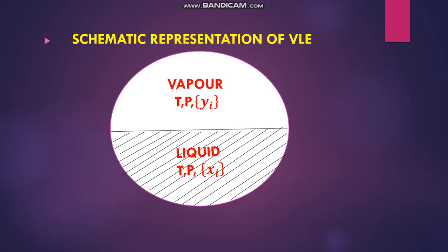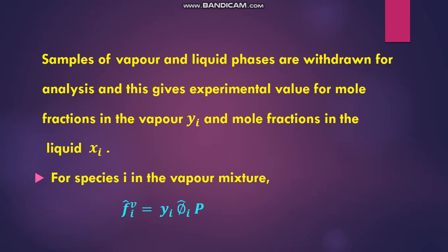In this diagram, we take a vessel in which the vapor is at constant temperature and pressure, with composition yi. Similarly, the liquid is indicated in the other half section, at constant temperature, pressure, and liquid phase composition xi. Samples of vapor and liquid phases are withdrawn for analysis, giving experimental values for mole fractions in the vapor, yi, and mole fractions in the liquid, xi.